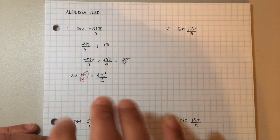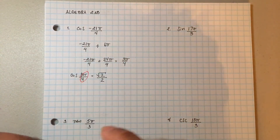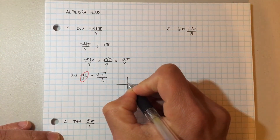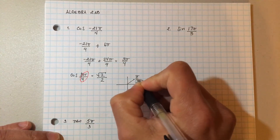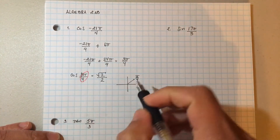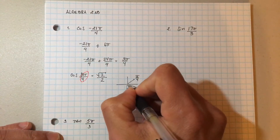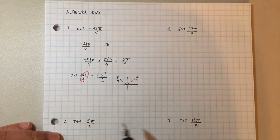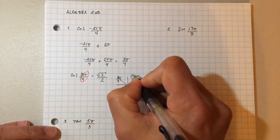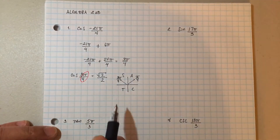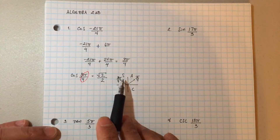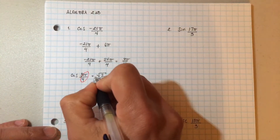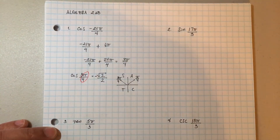The only problem is I have to figure out if it's positive or negative. So I need to figure out where 3π over 4 is located. π over 4 is in the middle — 3π over 4, that's 4 take away 1, would be in the second quadrant. And then we use All Sin Da Cos — in the second quadrant only sine is positive. That is not sine, so therefore it is negative.